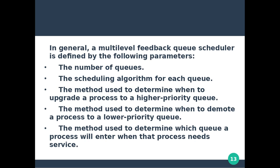In general, a multi-level feedback queue scheduler is defined by the following parameters: first, the number of queues; second, the scheduling algorithm for each queue; and third, the method used to determine when to upgrade a process to a higher priority queue.